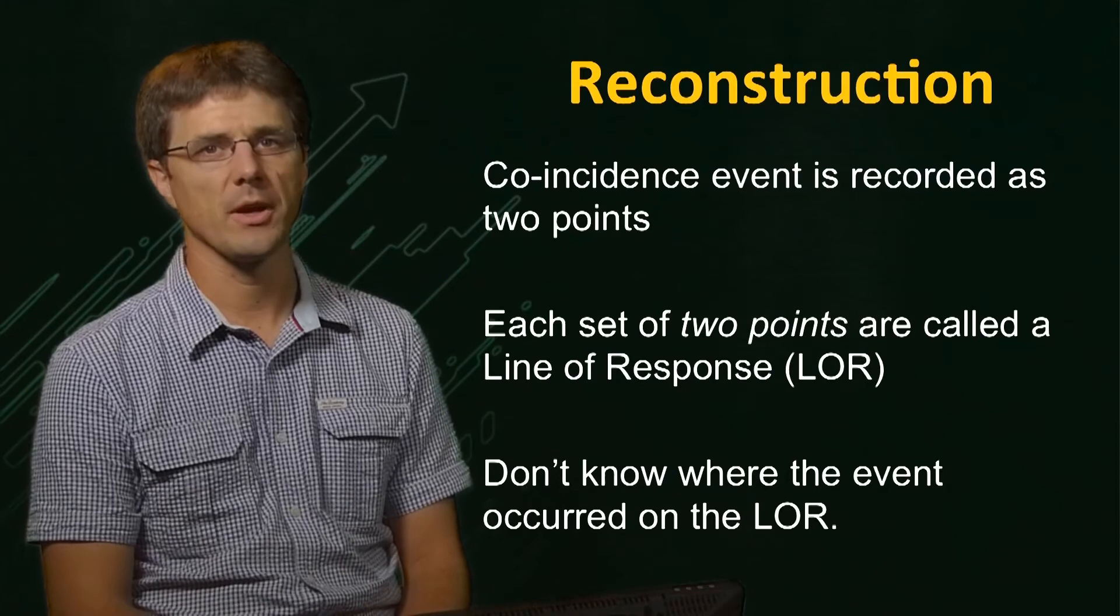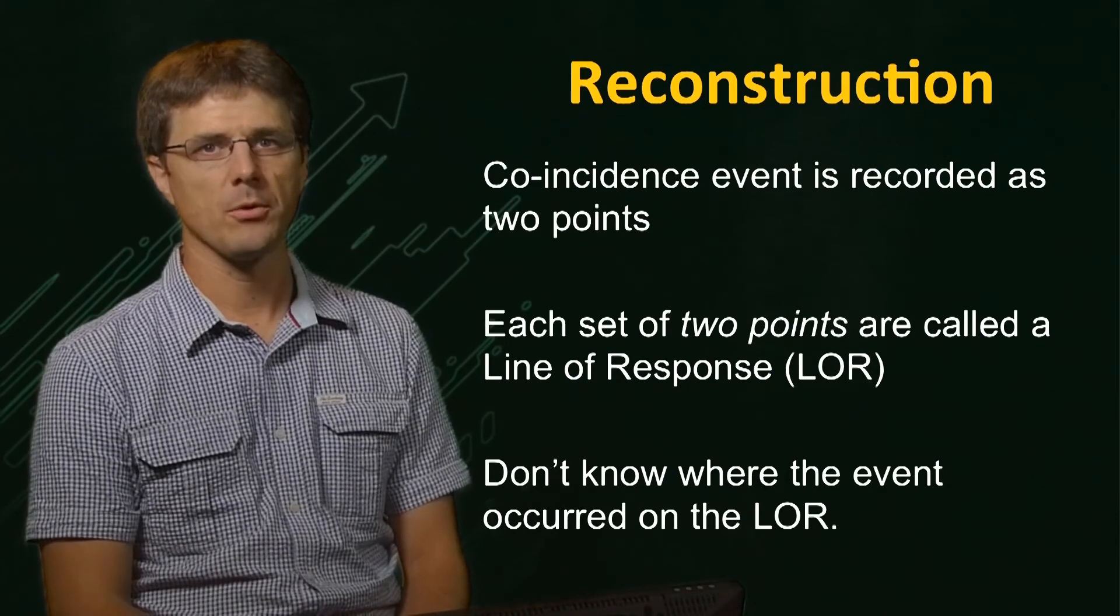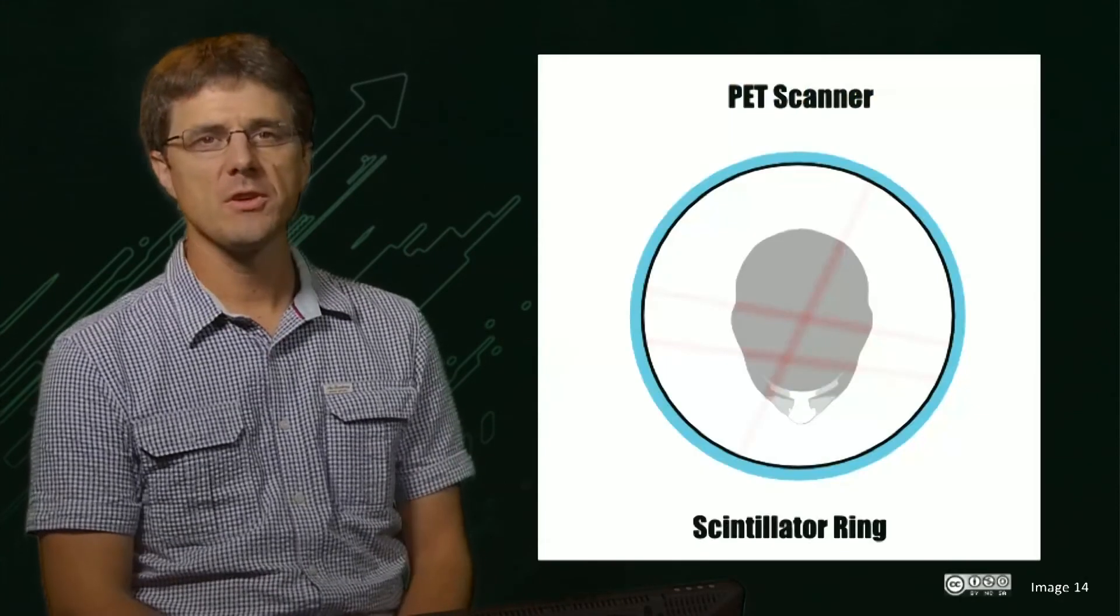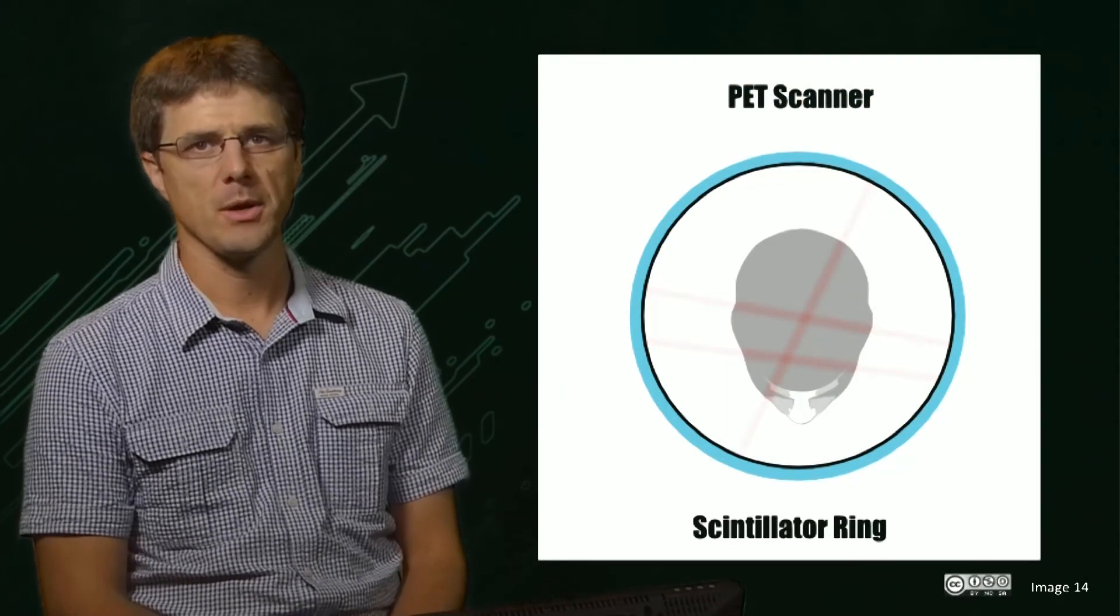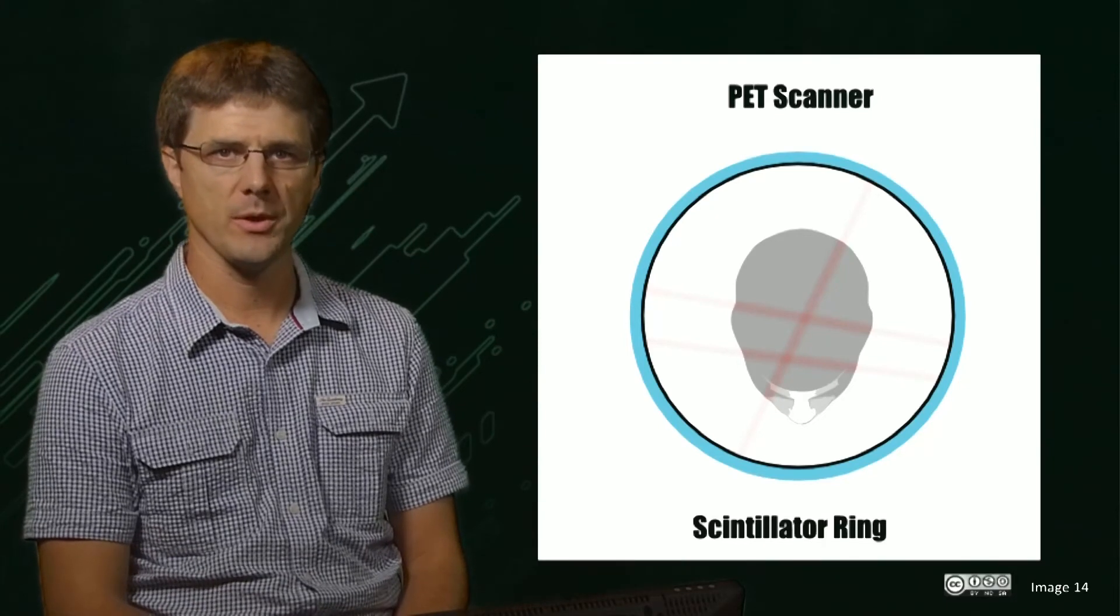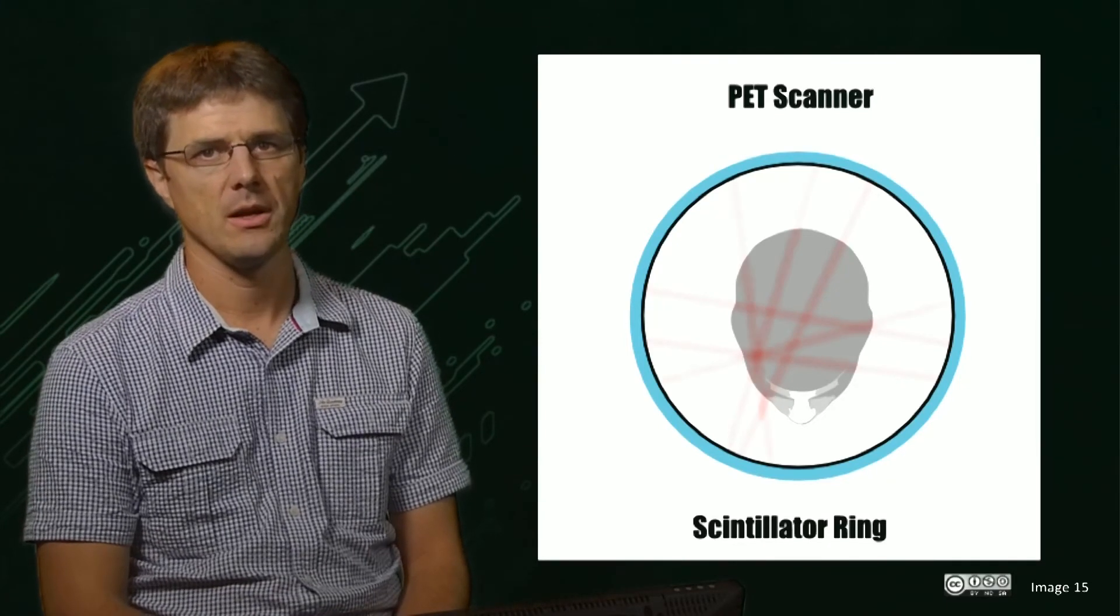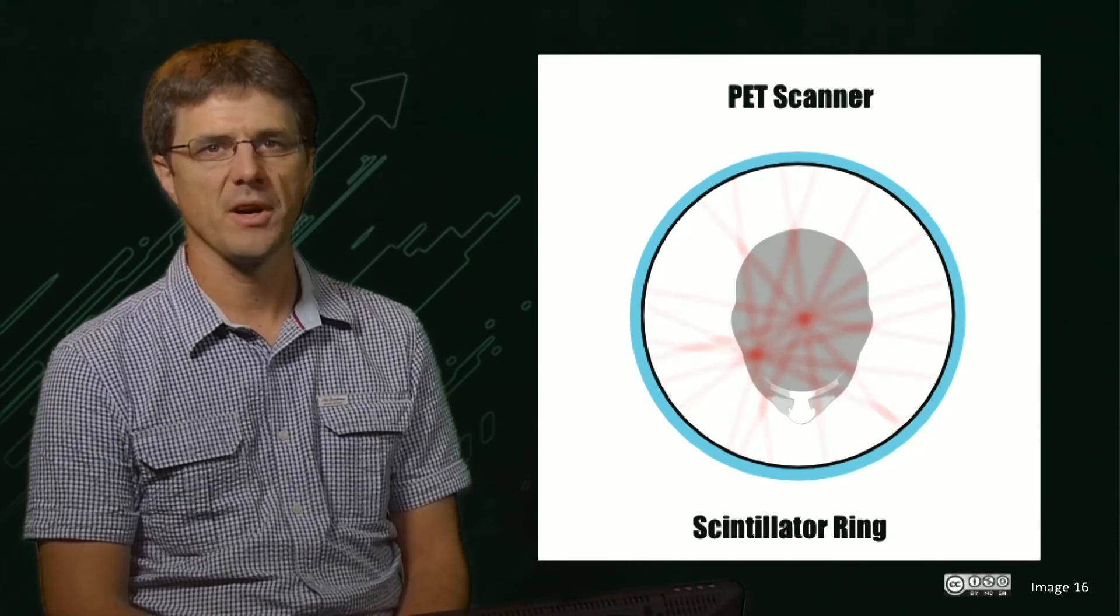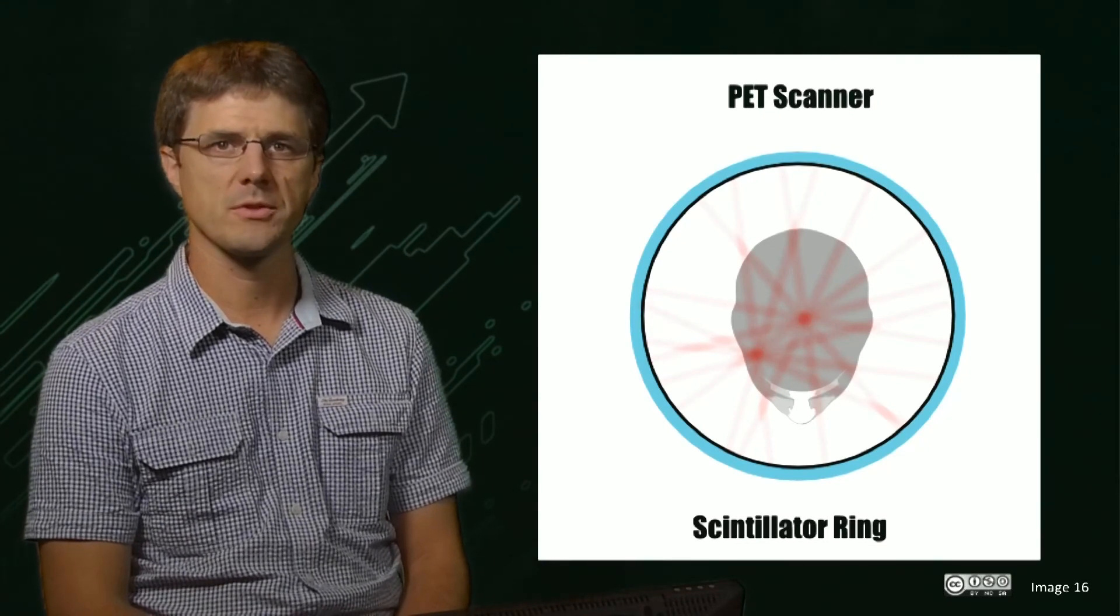These systems are called time-of-flight or TOF detectors, and operate on a timescale of approximately 3 nanoseconds. We can now visualize the reconstruction process by placing a probabilistic line between each of the two points from the coincidence event raw data. As we add more and more of these events, the result is a final probabilistic map of the source of the events.